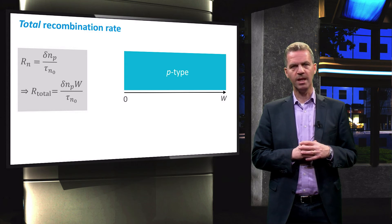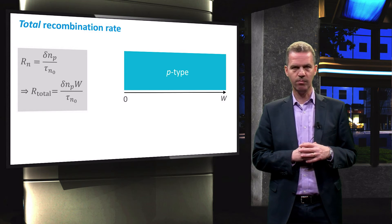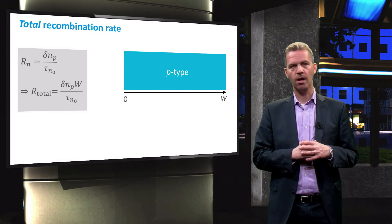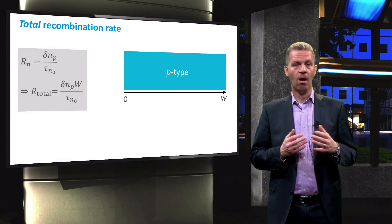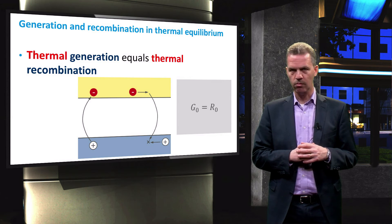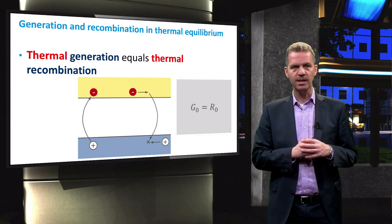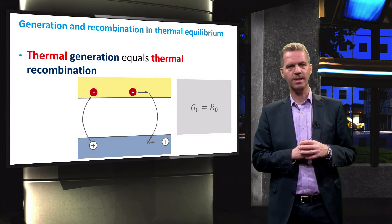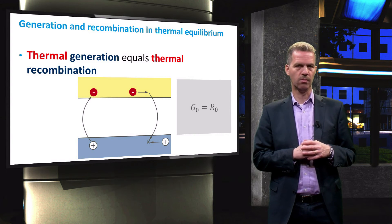This expresses the recombination rate in steady state equilibrium which is not the same as thermal equilibrium. For the parameter J0, we look at thermal equilibrium. In that case, we have seen that the generation rate equals the recombination rate.